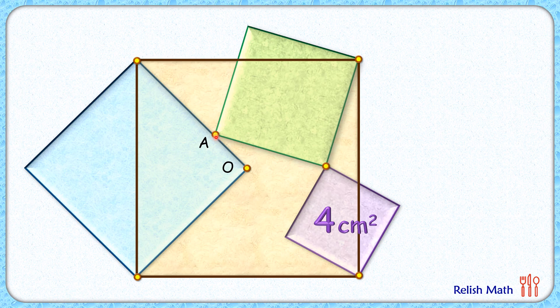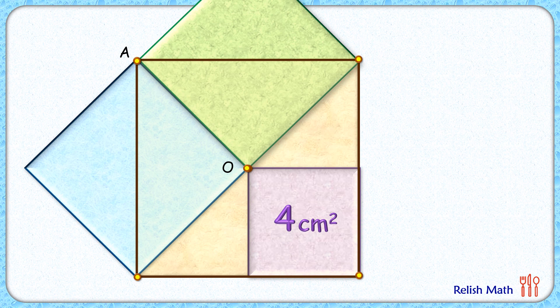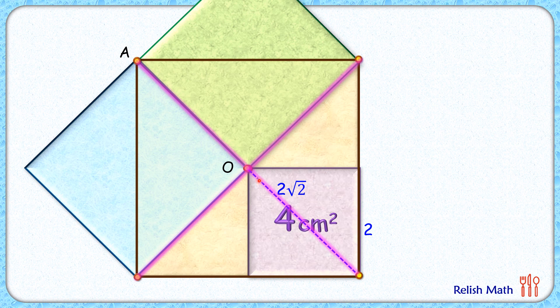If we move point A — the vertex of the green square — along the side length, the original conditions of the question remain the same, so our answer should remain the same. Let's move point A vertically upward along the side length of the blue square. This figure still meets all the original conditions. The side length of the purple square is 2 cm, its diagonal is 2√2 cm, O is the center of the square, and AO is 2√2 cm. Thus the area of the green square is (2√2)² = 8 cm².